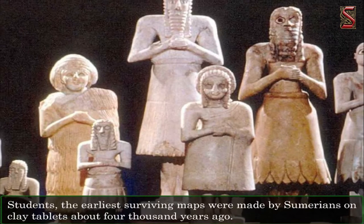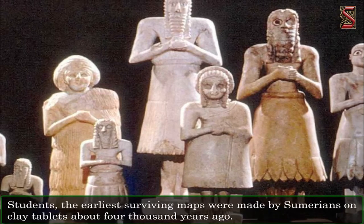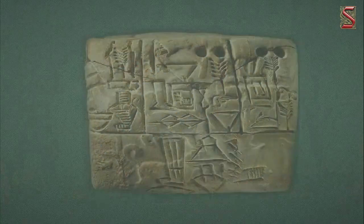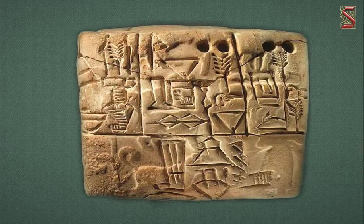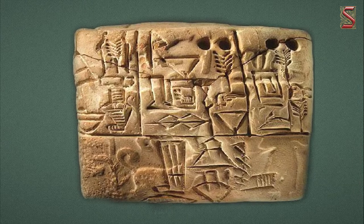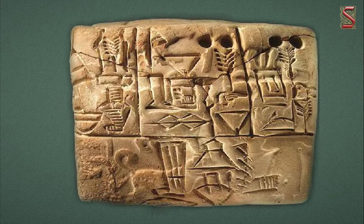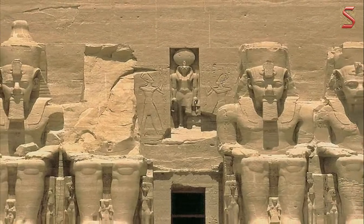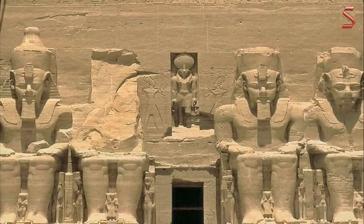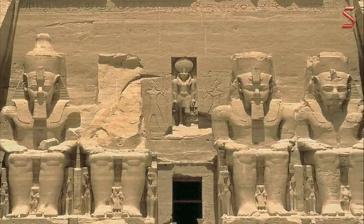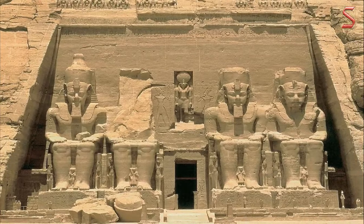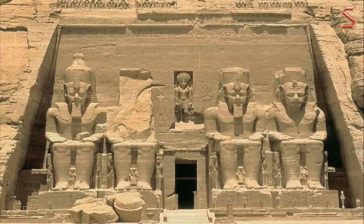The earliest surviving maps were made by Sumerians on clay tablets about 4000 years ago. The Sumerians used these maps to keep a record of the large tracts of lands that the Sumerian temples owned.